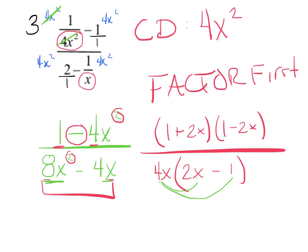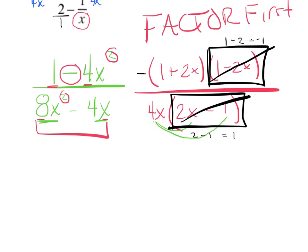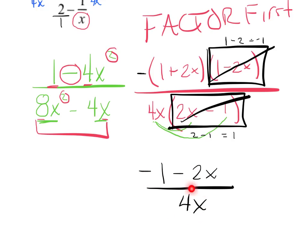Distribute back through to check: 4x times 2x is 8x squared, 4x times 1 is 4x. Now work out the canceling — I've got 2x minus 1 and 1 minus 2x. Are they the same or different by a negative? If x equals 1, I get 1 minus 2 equals negative 1, and 2 minus 1 equals positive 1 — they're different by a negative, so cancel and put a negative out front. Final answer: negative 1 minus 2x all over 4x. Don't cancel the x's since not every term has one, and 2 and 4 can't simplify since that term isn't divisible.